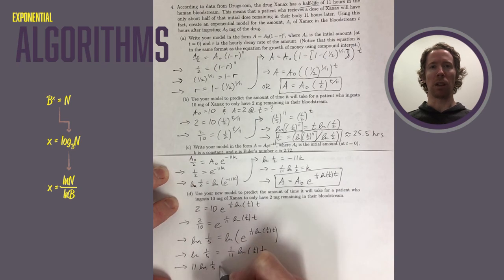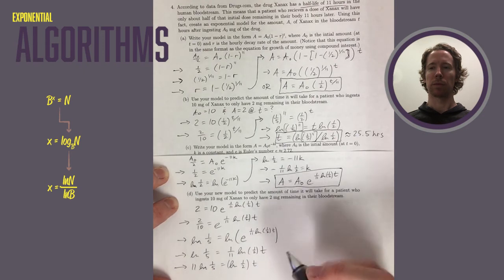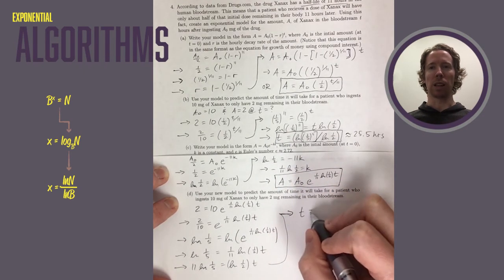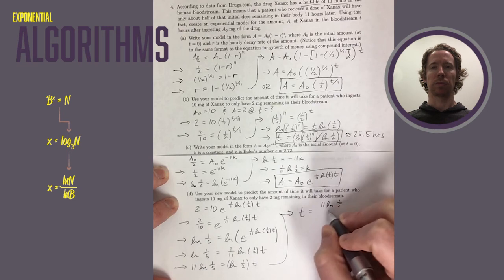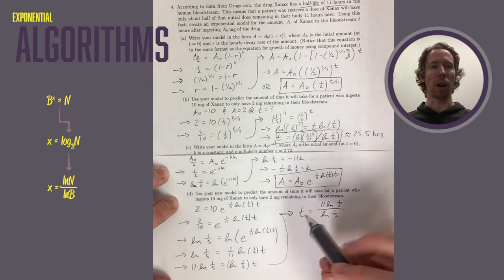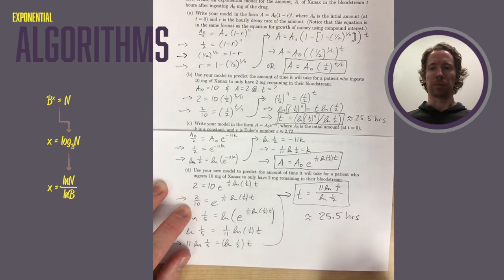Multiply both sides by 11 to get rid of the 1 over 11. And then divide both sides by natural log of 1 half. And this answer that we get is actually exactly the same answer that we got in part B. So if I write down an approximation for it, again, it's going to come out to 25 and a half hours which gives me the amount of time that will take for that drug to reduce to 2 milligrams in the bloodstream.